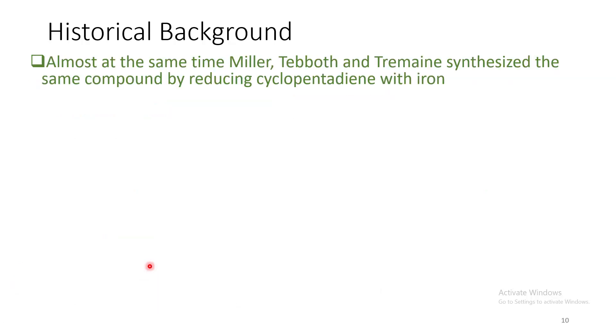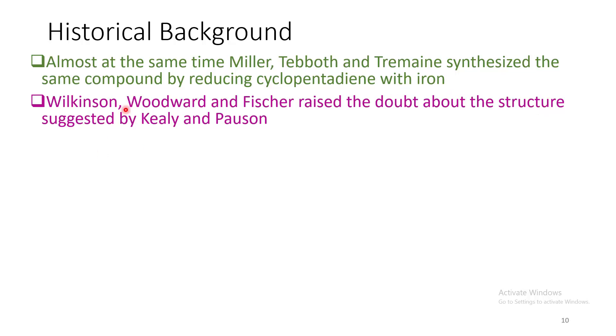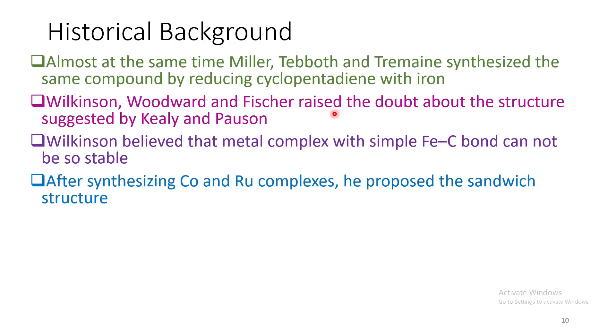Almost at the same time, Miller, Tebboth and Tremaine synthesized the same compound by reducing cyclopentadiene with iron. But Wilkinson, Woodward and Fischer raised the doubt about the structure suggested by Kealy and Pauson. Wilkinson believed that a metal complex with simple metal-carbon bond cannot be so stable. After synthesizing the cobalt and ruthenium complexes, he proposed the sandwich complex for the first time, which was later validated.